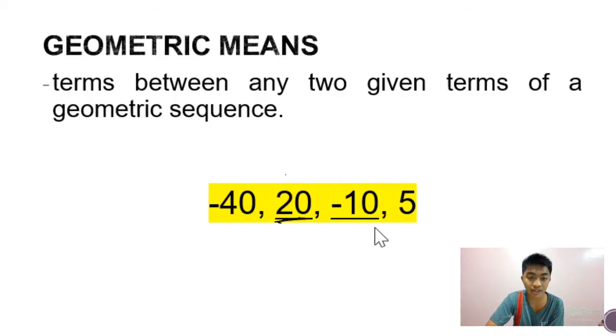So, in this given geometric sequence, if we are given negative 40 and 5, ang geometric means ay 20 and negative 10. We can also say that 20 is the geometric mean between negative 40 and negative 10. So a geometric mean is simply a term or terms in between two given terms.